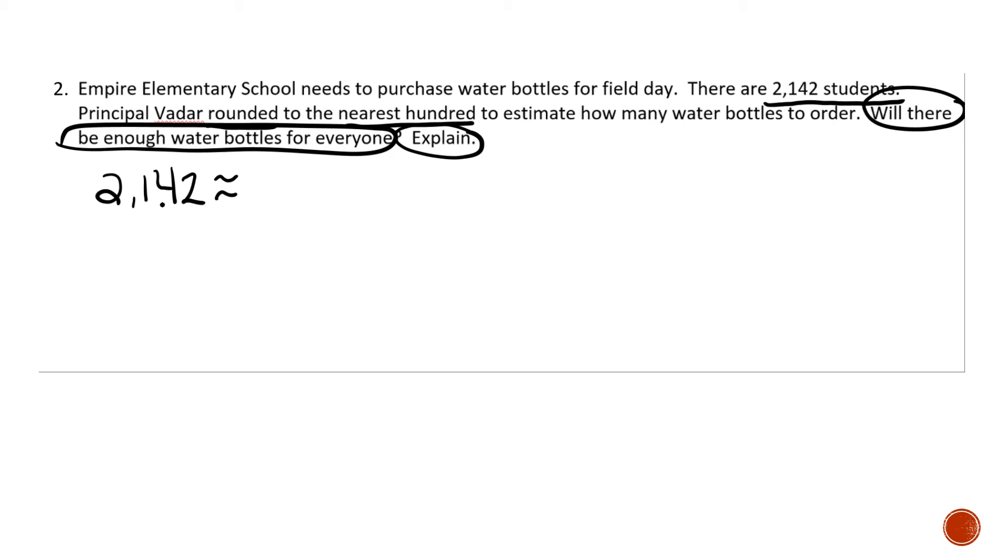First, I know I need to round to the nearest hundred. So I am going to underline the hundred's place and draw an arrow to my rounding buddy. The rhyme said, 5 or above, give it a shove, 4 or less, let it rest. I see a 4, so I know the 2 and the 1 are going to rest and stay the same. The other digits will turn into zeros.